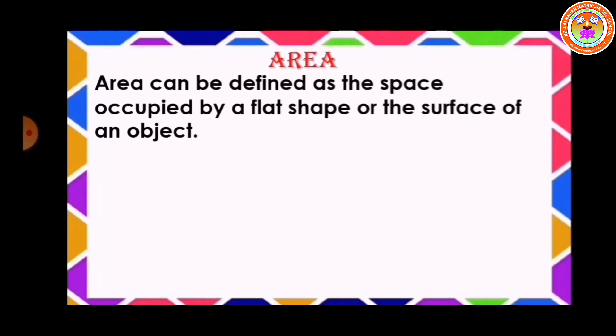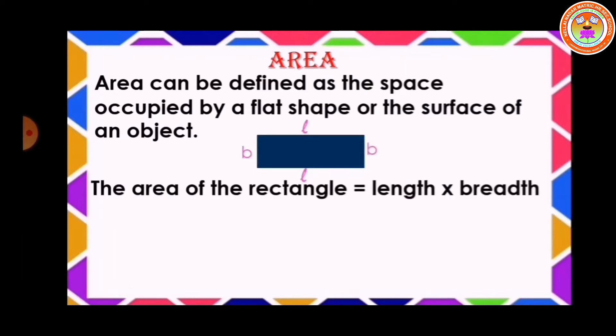Define area. Area can be defined as the space occupied by the flat shape or the surface of an object. Let's see the area of the rectangle. We know that rectangle has two opposite sides — two equal lengths and two equal widths. The formula of the area of the rectangle is equal to length into breadth, that is L into B square units.